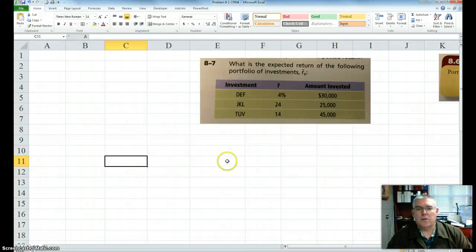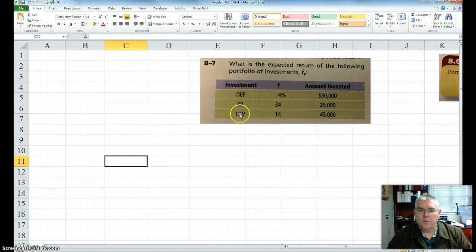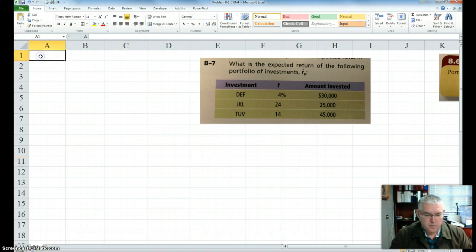Okay, so I had some students have questions on problem 8-7, how to solve it. We have three different investments. Each one has its own expected return. And we have different amounts we've invested in each one of these securities. So we want to know the expected return of our whole portfolio, which consists of these different three securities. So let's go ahead and put it into Excel.